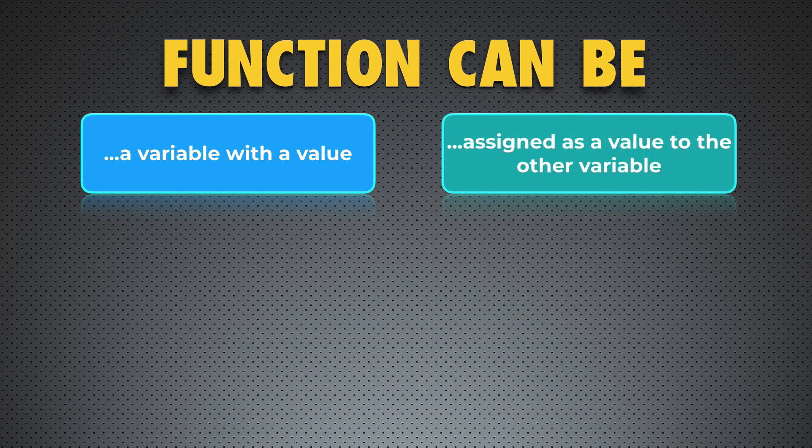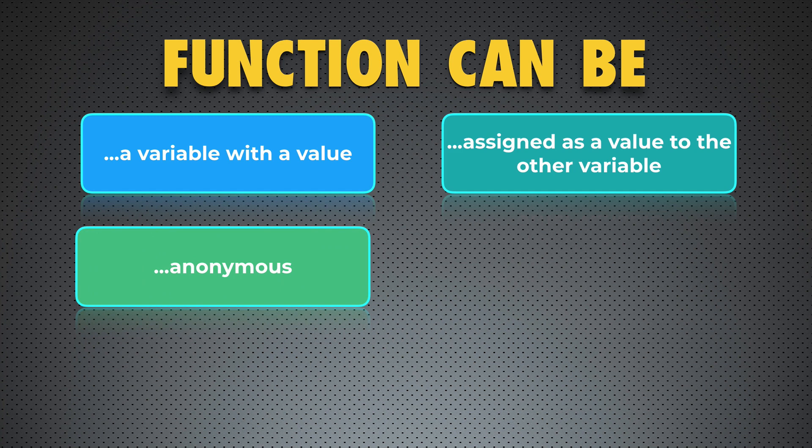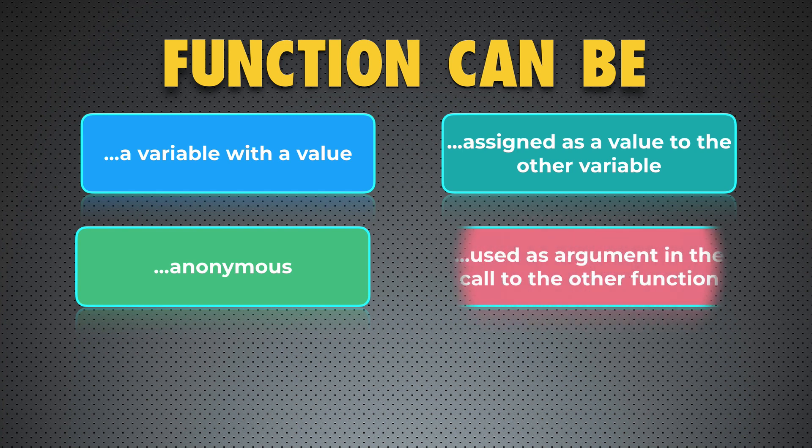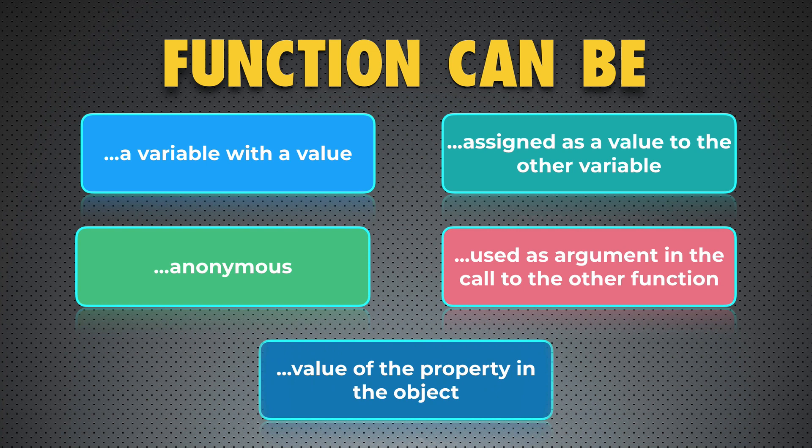Next, a function can be assigned as a value to another variable. It means that when you create a new variable, you can use a function on the right-hand side of the assignment and assign the function to the variable. That is the second usage of the function. Next, a function can be anonymous. Again, in the previous example the function had the name sum, but functions can be anonymous in JavaScript without any name. Next, a function can be used as an argument in the call to another function. This function that is an argument in the call to another function is called a callback function. And a function can be the value of a property in an object. In this case, a property that holds a function as a value is called a method.